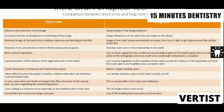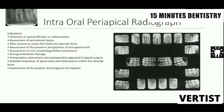The film holder holds the film and also has a PID positioning apparatus, so alignment becomes automatic. With the short cone, film bending can occur due to incorrect finger pressure, whereas the long cone uses a film holding device to prevent such errors. All the radiographs on the periphery are intraoral periapical radiographs; the ones in the middle are the bitewing radiographs, which we will discuss later.